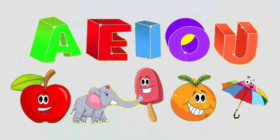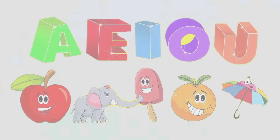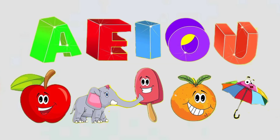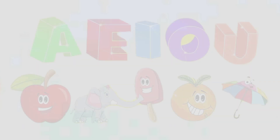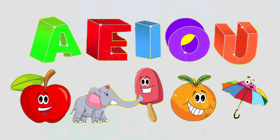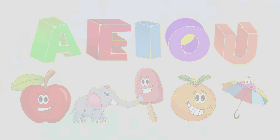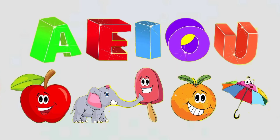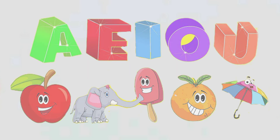Say vowels: A for apple, E for elephant, I for ice cream, O for orange, U for umbrella.